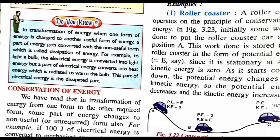Do you know? During the transformation of energy, when one form of energy is changed to another useful form, a part of the energy gets converted into a non-useful form. This is called the dissipation of energy. For example, when you light a bulb, electrical energy is converted to light energy, but a part of the electrical energy is also converted to heat energy. That part is the dissipated part.